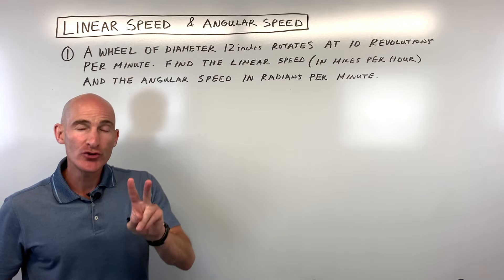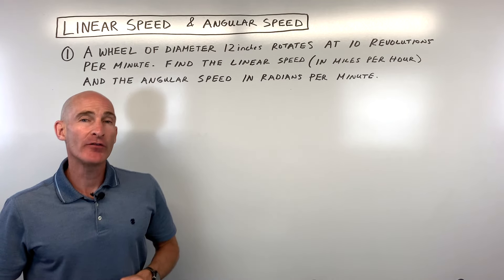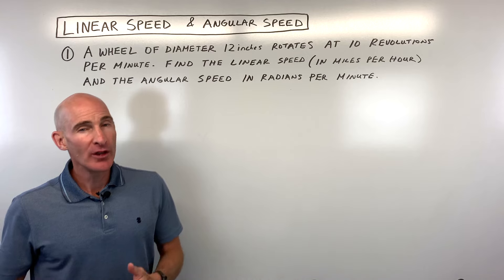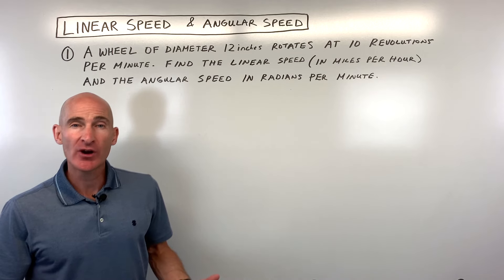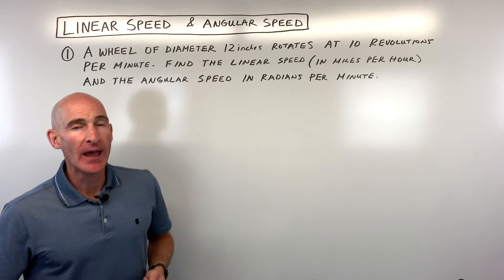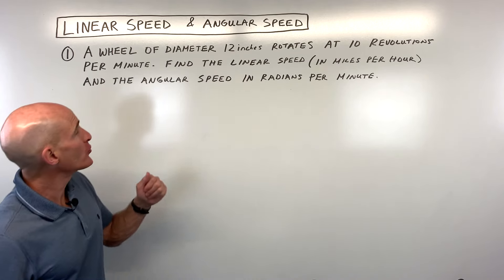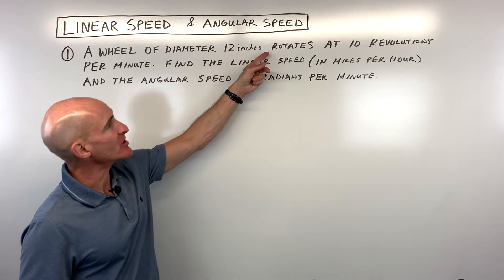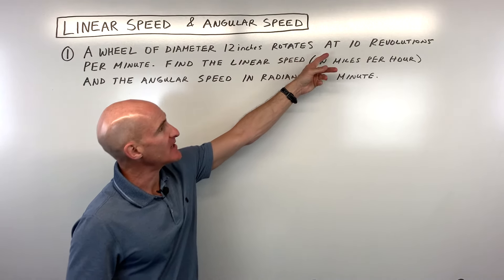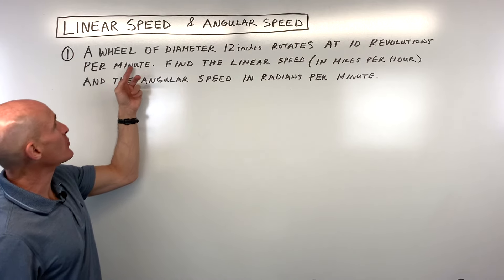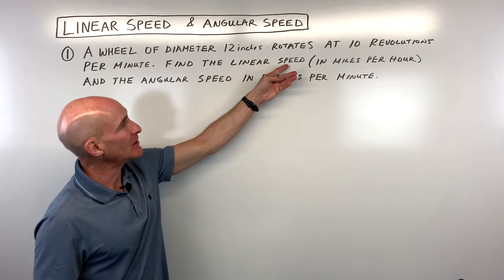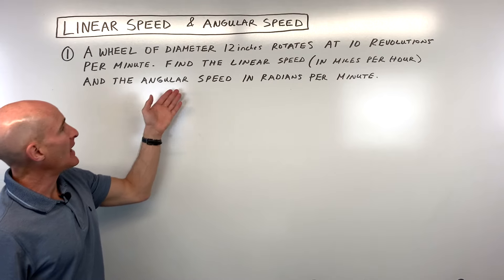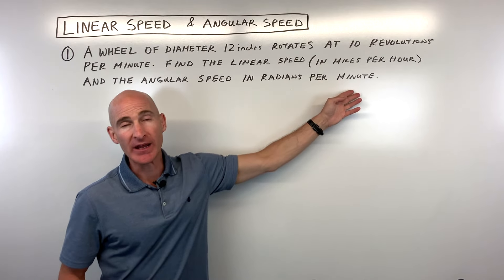In this video, we're going to go through two problems involving linear speed and angular speed. Let's do the first problem together and see if you can try the second one on your own. The first problem talks about a wheel of diameter 12 inches that rotates at 10 revolutions per minute. We want to find the linear speed in miles per hour and the angular speed in radians per minute.